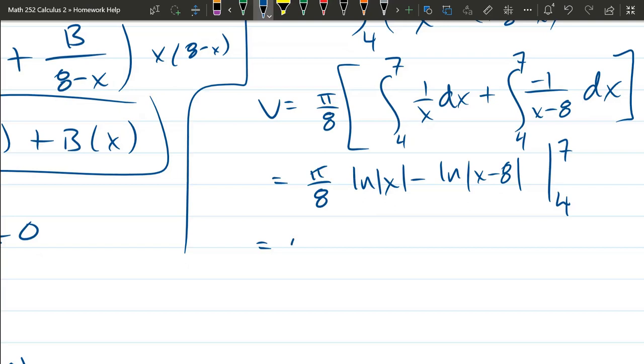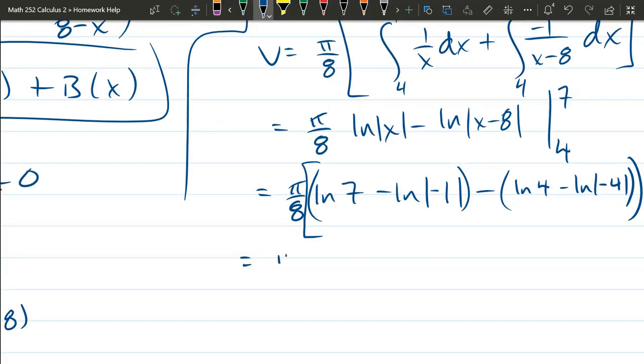We're going to plug in 7. So, it's ln 7 minus ln 7 minus 8. Oh, yeah. Look at that. Negative 1. We did get negatives. So, that would be negative 1. Yes. Minus. So, that's the positive 1. Minus. And the pi over 8 times the whole thing. Now, plug it in 4. ln 4 minus ln 4 minus 8 is negative 4. Negative 4.